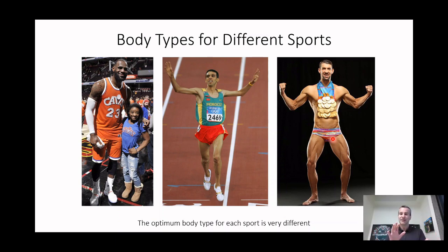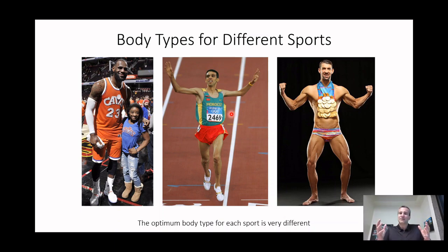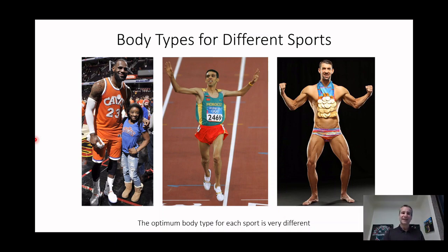For a runner, you want long feet that act like flippers, a small torso so you don't have much mass, and long legs relative to your body size. The optimum body type isn't one single thing — it's whatever gives you the best mechanical advantage for producing exactly what you need for your sport.